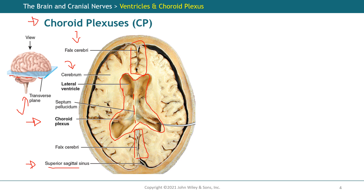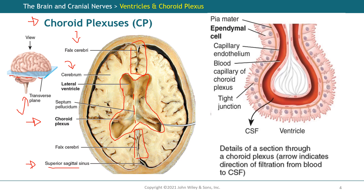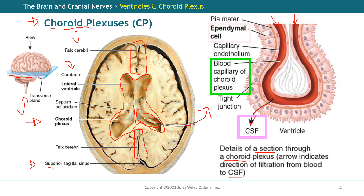Now the only structure we haven't named is the choroid plexus. Here is a schematic of the choroid plexus — a section through it shows that blood is taken, filtrated using epithelial cells, and produces the CSF, the cerebrospinal fluid. In the next slide I'll go over this process and show the different elements of the choroid plexus, but first I wanted to give you the big picture of what is happening and where the choroid plexus is located.